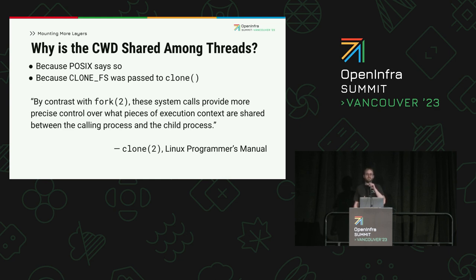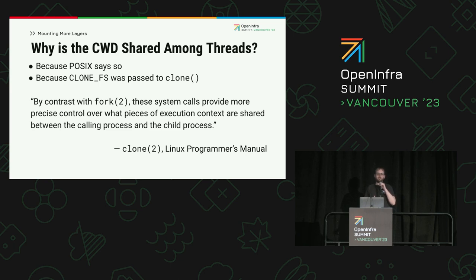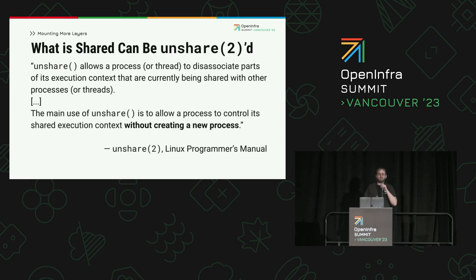Clone can also be used to spawn processes, as there's not much distinction between processes and threads. A thread is just a process that shares thread group ID, virtual memory space, and signal handlers with other threads in the process. If the cloneFS flag is passed to the clone syscall, the calling process and child process share the same file system information, which encompasses the file system root, the umask, and the current working directory; otherwise the child gets a copy. Most process execution context that can be shared using clone can be unshared using the unshare syscall. A thread can call unshare with the cloneFS flag to disassociate its file system information from that of the other threads. Note that there is no way to re-associate the thread's file system information afterwards.